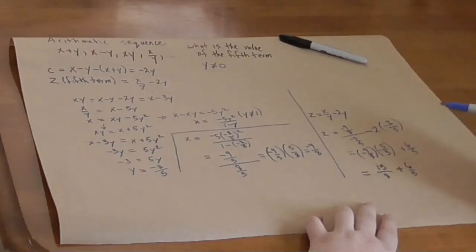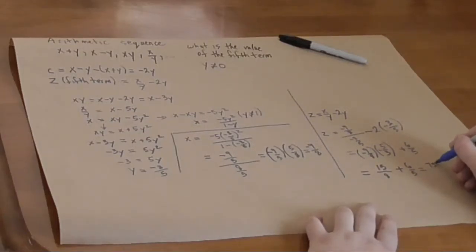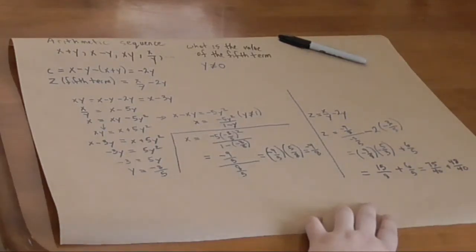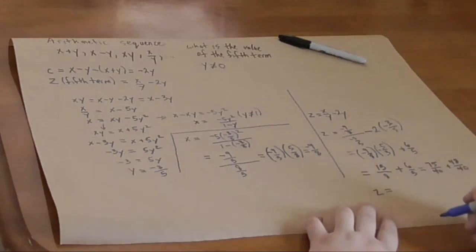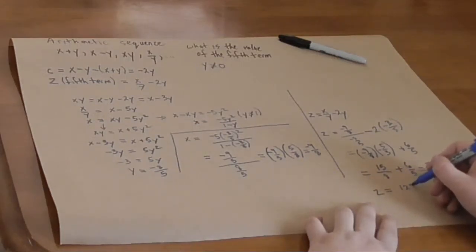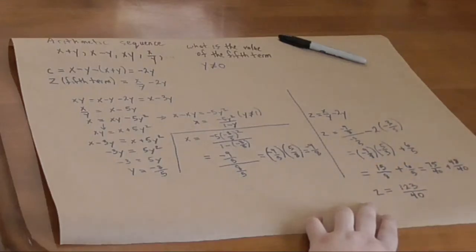We get a common denominator here of 40. And we adjust these things. That turns into 75 over 40 plus 48 over 40. Because, you know, to get 40 here, you multiply by 5. So, it's 5 15s. To get 40 here, you multiply by 8. So, it's 8 6s. That gives us z equals 123 over 40.